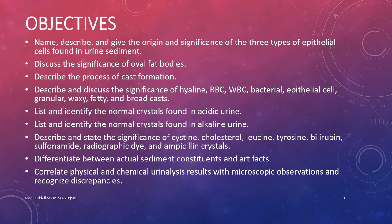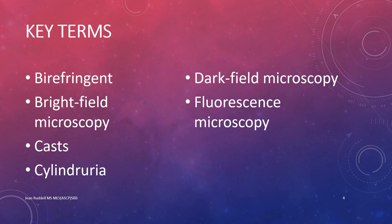Further objectives: differentiate between normal and abnormal sediment constituents; discuss the significance of red blood cells and white blood cells in urine sediment; name, describe, and give the origin and significance of the three types of epithelial cells found in urine sediment; discuss the significance of oval fat bodies; describe cast formation and the significance of hyaline, red blood cell, white blood cell, bacterial, epithelial cell, granular, waxy, fatty, and broad casts; list and identify normal crystals in acid and alkaline urine; describe abnormal crystals including cysteine, cholesterol, leucine, tyrosine, bilirubin, sulfonamide, radiographic dye, and ampicillin crystals; differentiate between actual sediment constituents and artifacts; and correlate physical and chemical urinalysis results with microscopic observations.